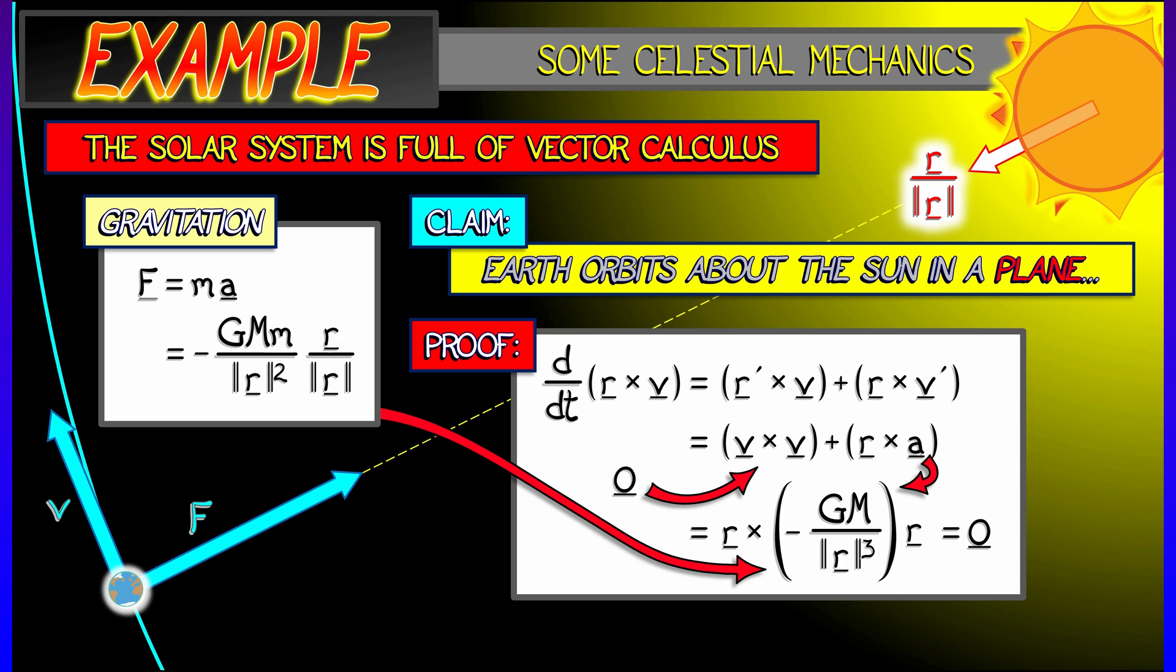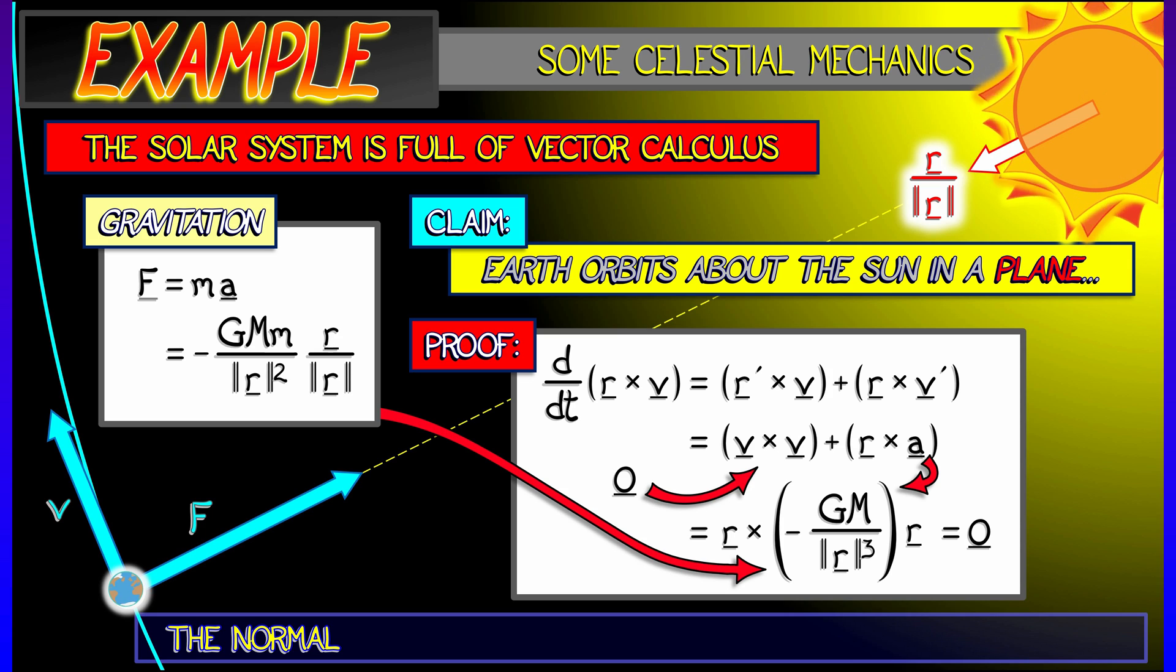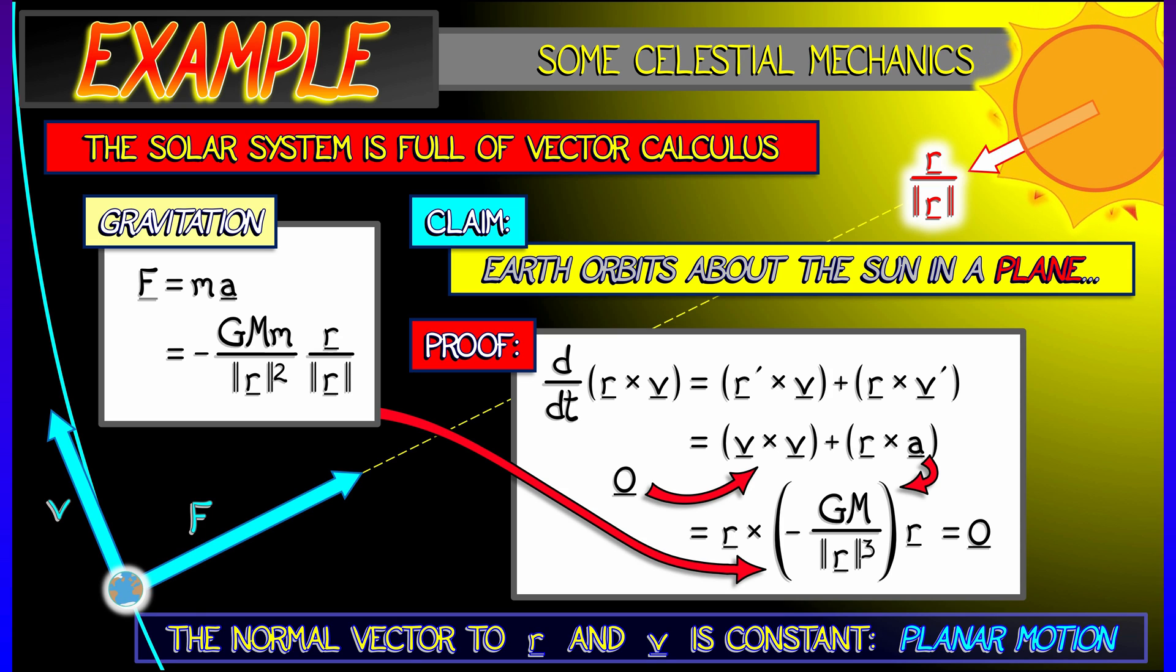That means that r cross v, the cross product of those two vectors never changes. That means that the plane spanned by r and v stays constant. Derivative is zero means it doesn't change. That means the earth moves about the sun within a plane. That's pretty cool. Using just a little bit of information about cross products and derivatives.